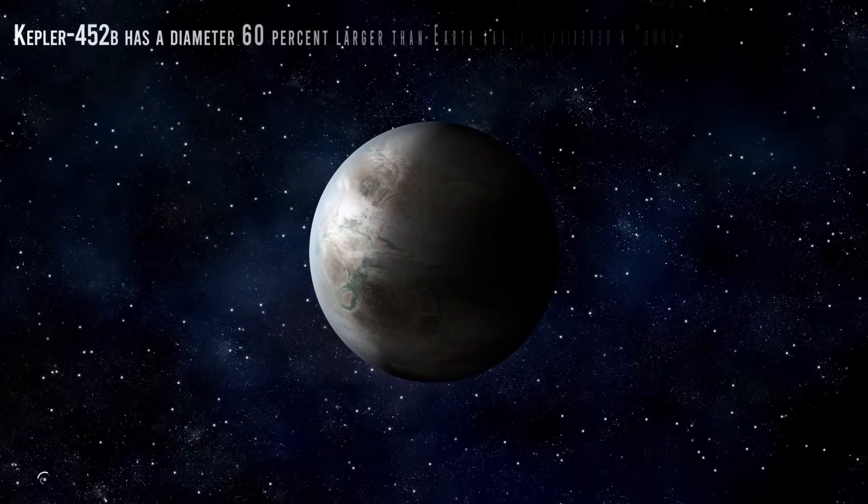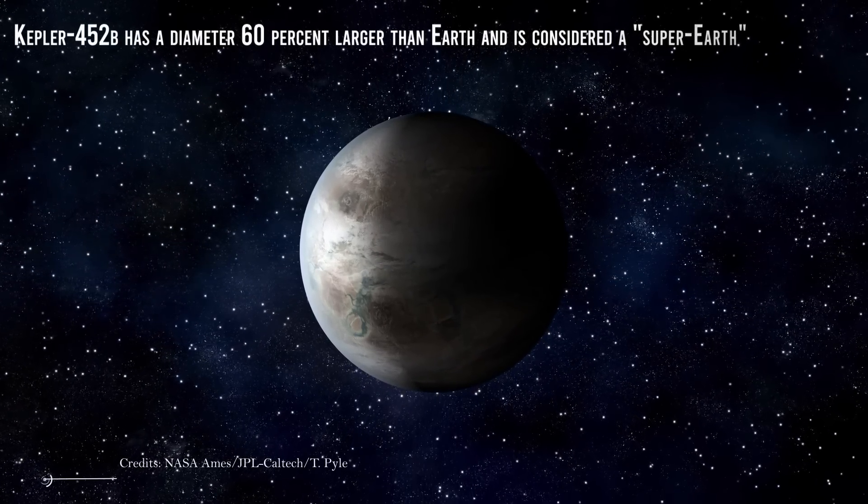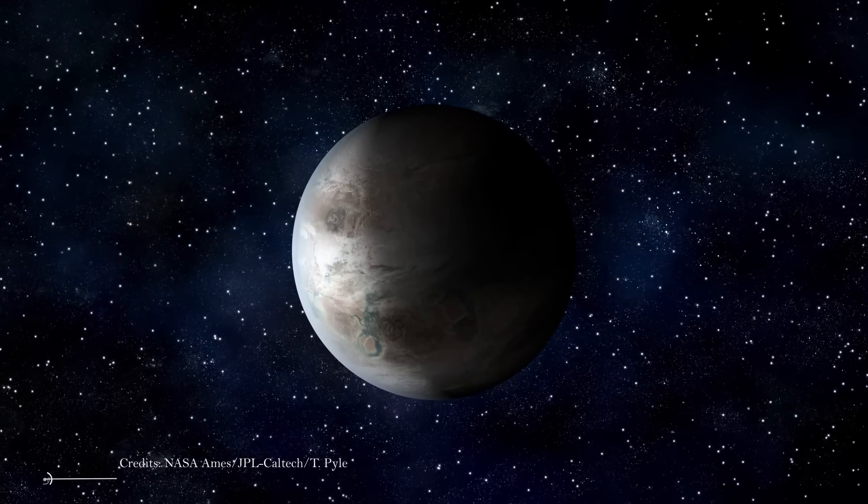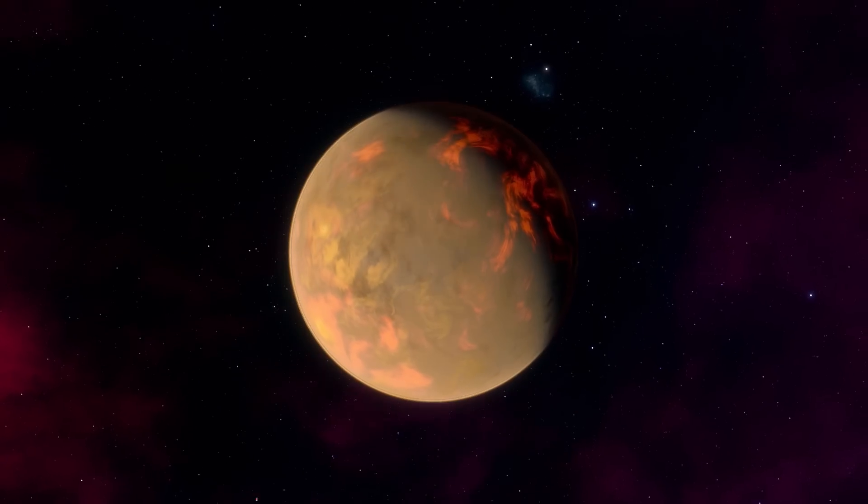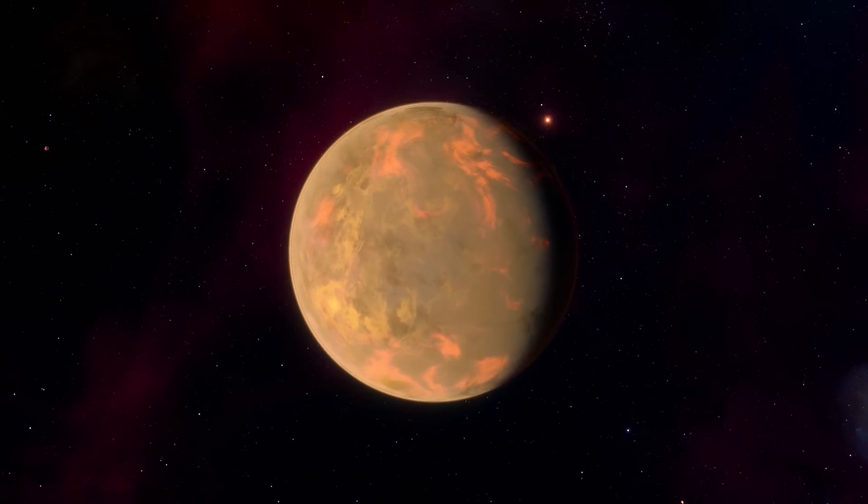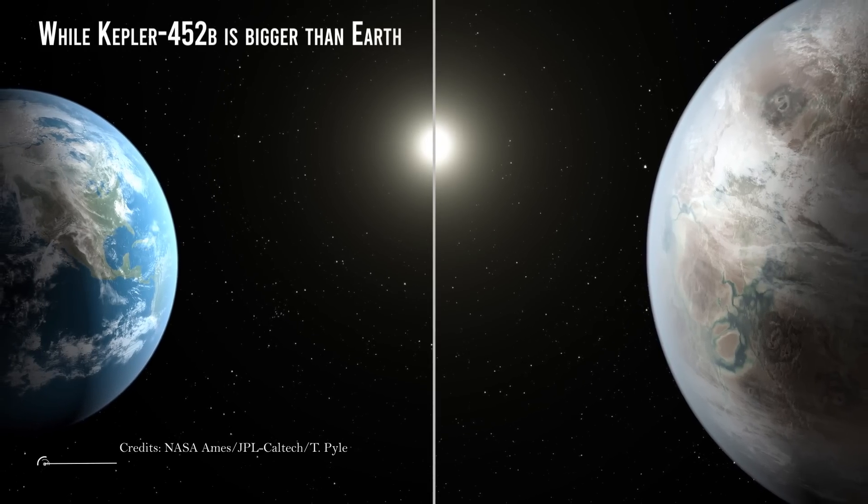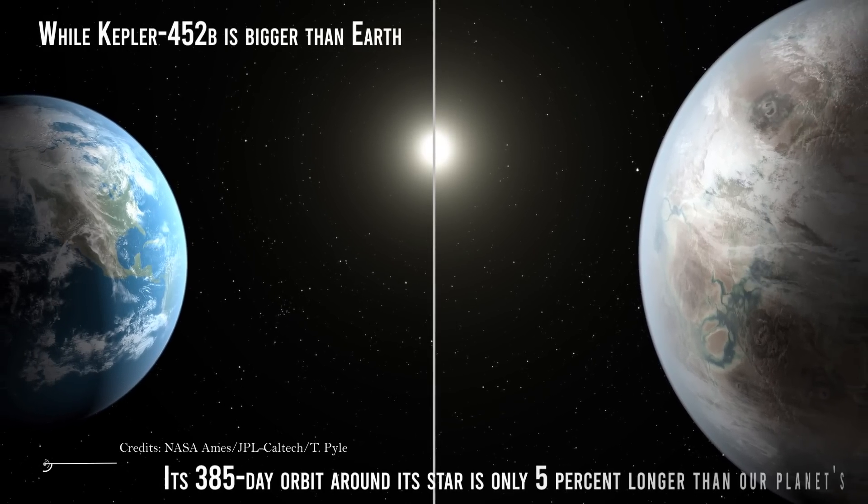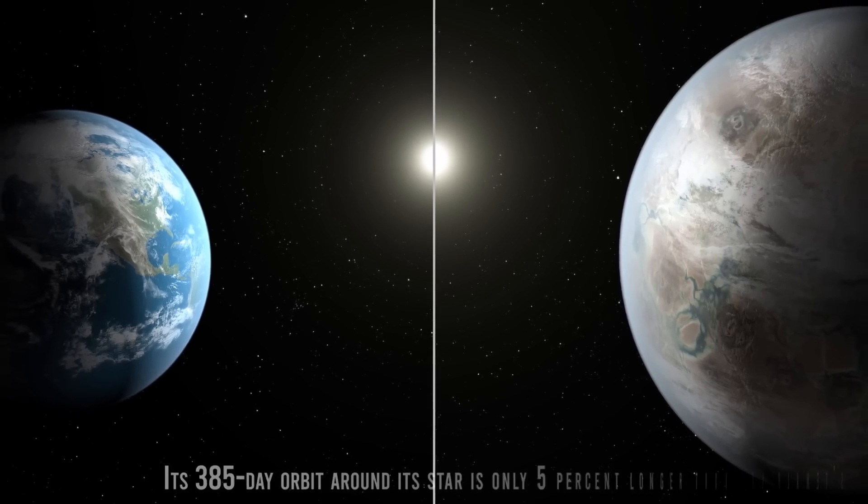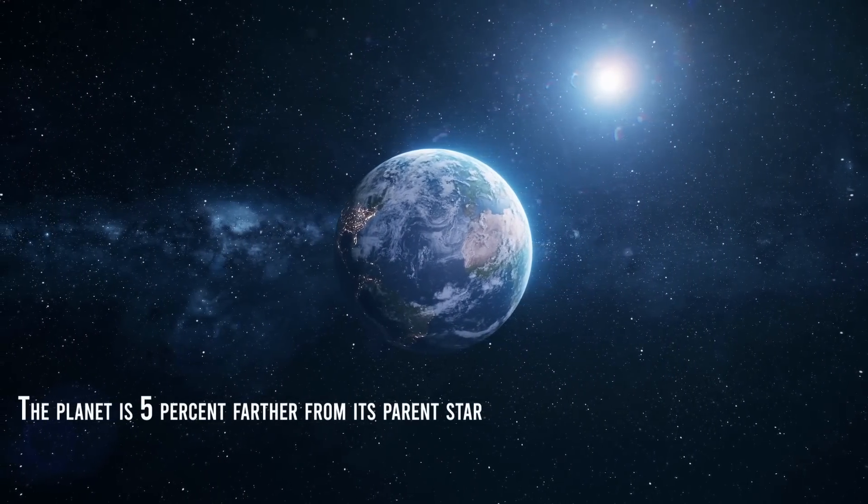Kepler-452b has a diameter 60% larger than Earth and is considered a super-Earth-type planet. While their mass and composition have yet to be determined, previous research suggests that planets the size of Kepler-452b have a good chance of being rocky. While Kepler-452b is bigger than Earth, its 385-day orbit around its star is only 5% longer than our planet's. The planet is 5% farther from its parent star than Earth from the Sun.